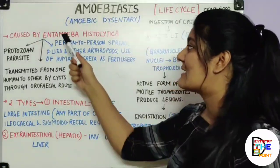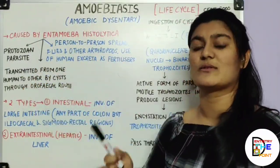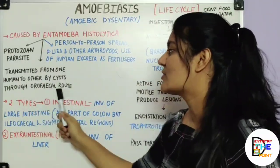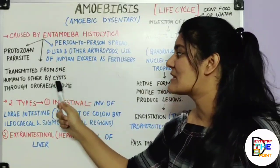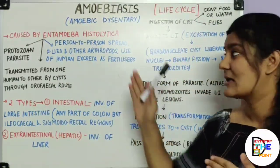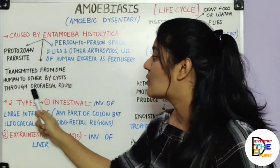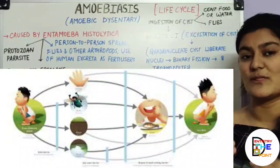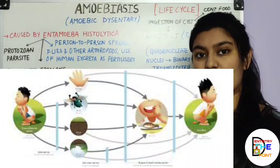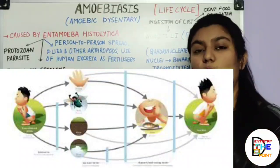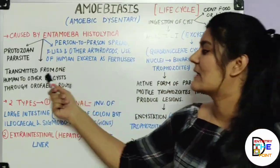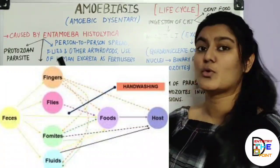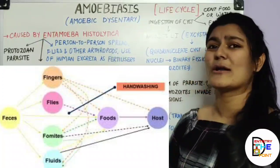Amoebiasis is caused by Entamoeba histolytica, which is a protozoan parasite. It resides in the human body and is transmitted from one person to another through cysts via the orofecal route. This cyst is an inactive vegetative form of the organism. The orofecal route means that from the feces of one person, the pathogen passes to the mouth of another — through contaminated food, water, flies, arthropods, human excreta used as fertilizer, or person-to-person spread.